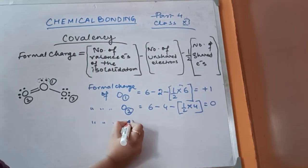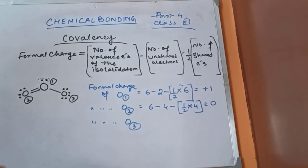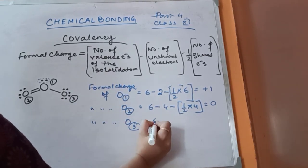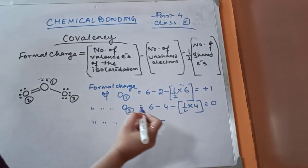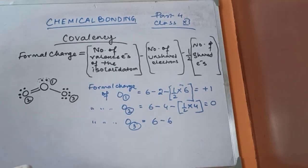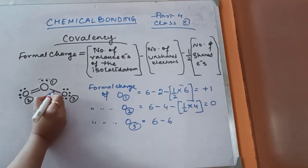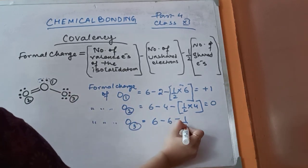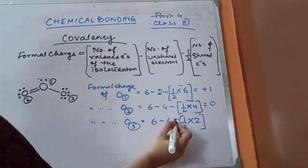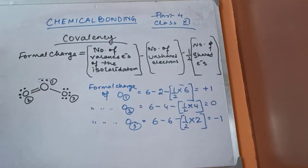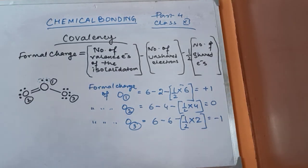The formal charge of O3 — number of valence electrons for oxygen is 6. Number of unshared electrons: 6. Number of shared electrons: 2 for this single bond, so half is 1. Thus: 6 minus 6 minus 1 = −1. This is how you calculate the formal charge of each individual atom in a particular molecule or ion — this is for ozone.